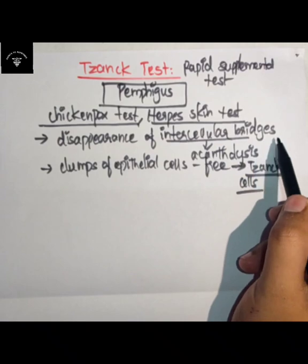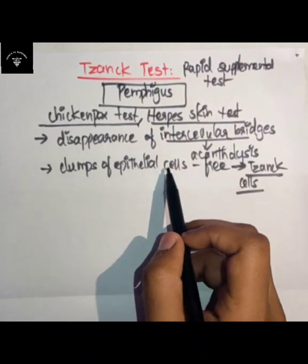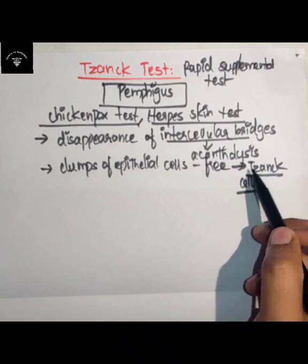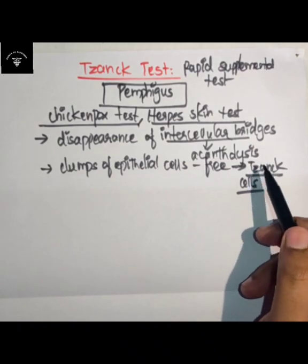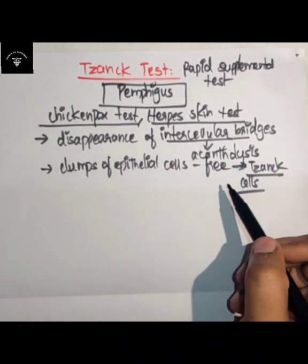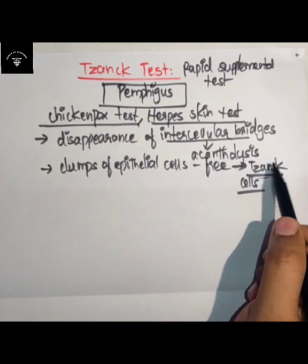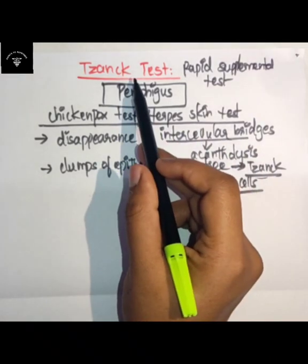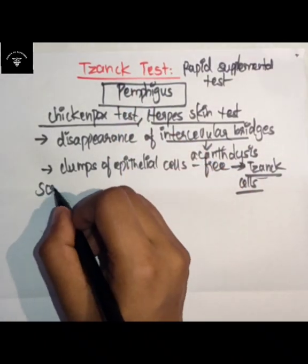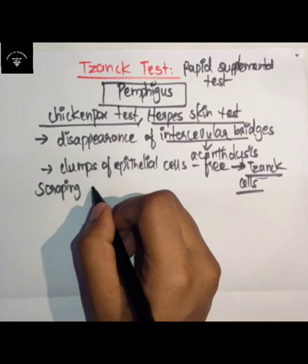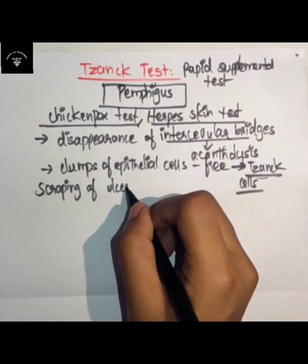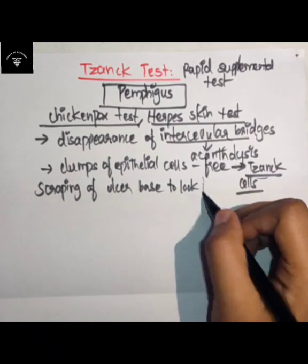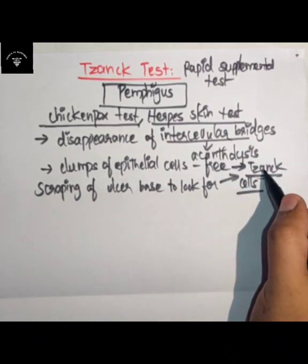On histological examination, there is a disappearance of intercellular bridges and clumps of epithelial cells lying free within the vesicular space — these are the Tzanck cells. Scraping of the ulcer base to look for Tzanck cells and find whether they are present or not is known as the Tzanck test.